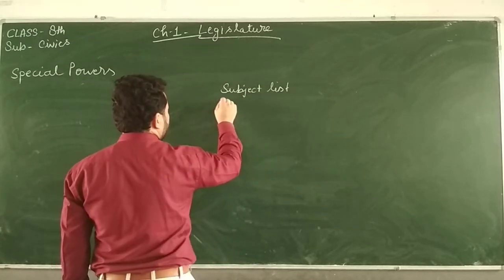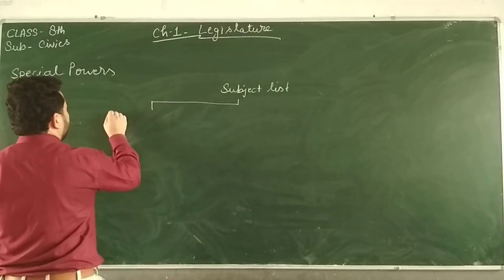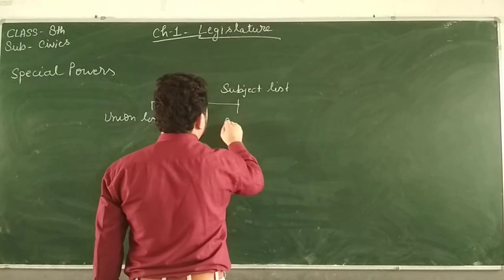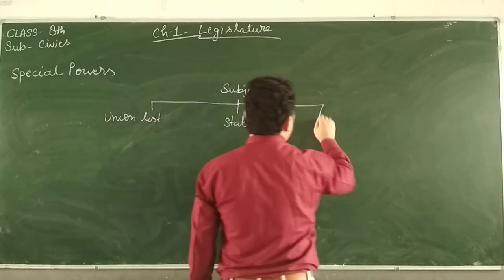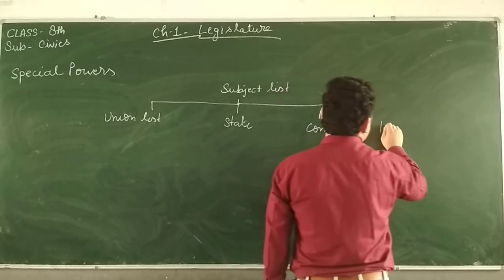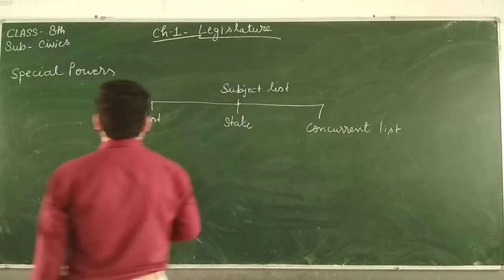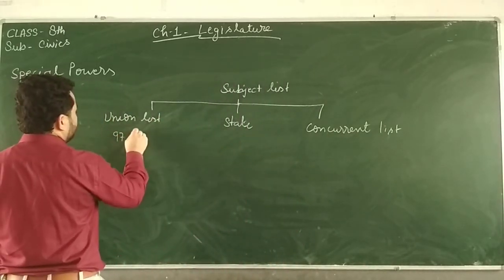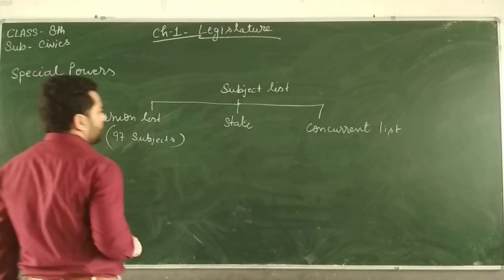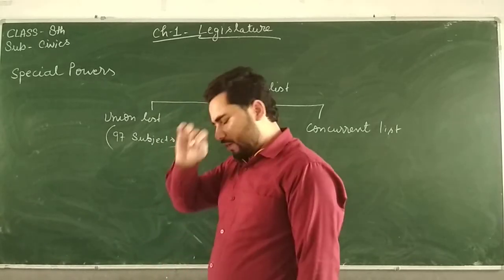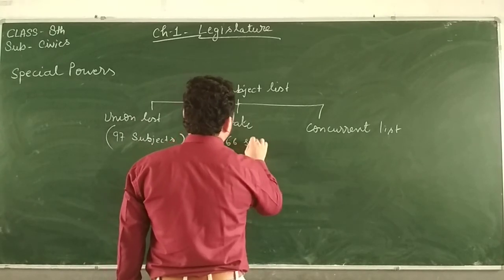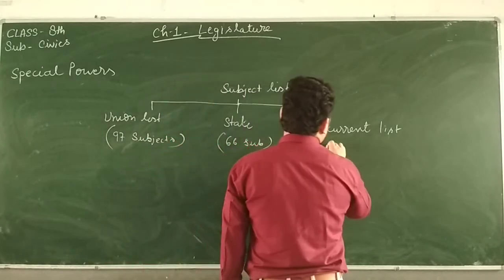The union list has 97 subjects, the state list has 66 subjects, and the concurrent list has 47 subjects — though these numbers may increase or decrease from time to time. Here, 'subject' does not mean academic subjects like history or geography; it means the area or field of work — the responsibilities assigned to each level of government.